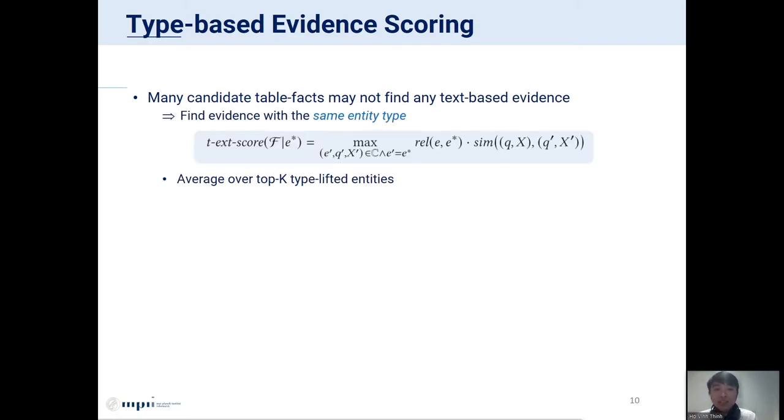So, our solution for this problem is that instead of looking for evidence with the same entity, we can find evidence with the same entity type. Specifically, for each entity E star of the same type as E, we compute a score from the best match evidence having E star as entity. For this, apart from computing quantity and context similarities, we also need to compute the entity similarity between E and E star, which is a function here. This function is basically based on the KB type system. Then, we define the final evidence score of a candidate table QFact as the average of top K type-related entities.